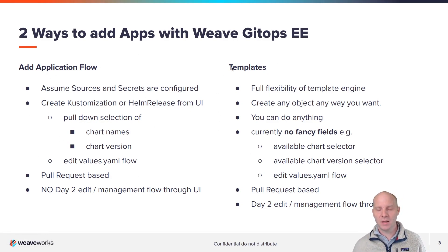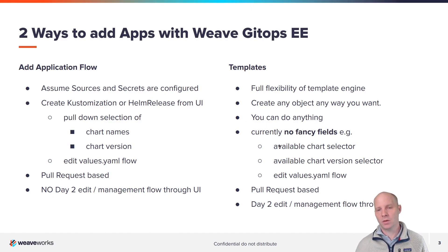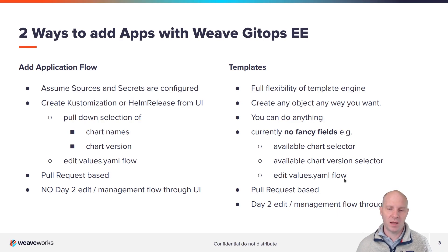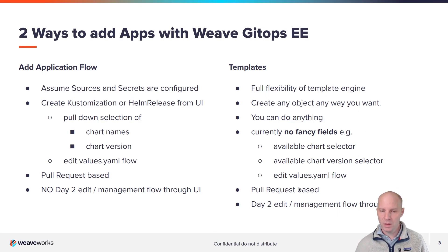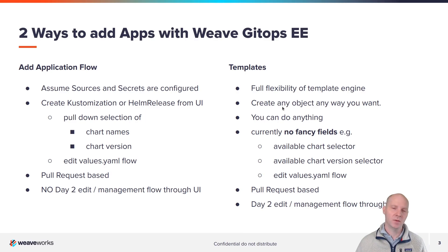Templates is something we've had in GitOps for quite a while, and we've now extended this to the application realm. We can use our templating engine — this is a very flexible way of creating any object with any value. While the add application flow is quite static, templates let you customize and do things that are not possible with the application flow. Currently there are no fancy fields in templates — the application flow has a chart selector, chart version selector, and you can edit YAML values in the UI. It's still a pull request-based approach, and this is an additional edit value. We can now use day-two edit and management flows through the UI.